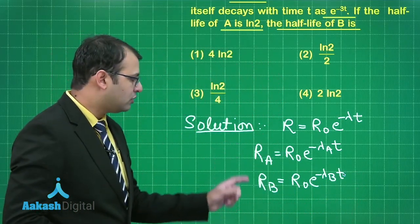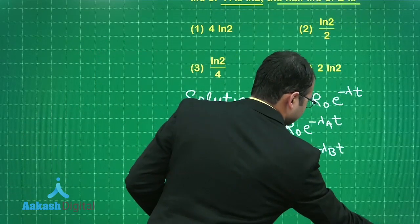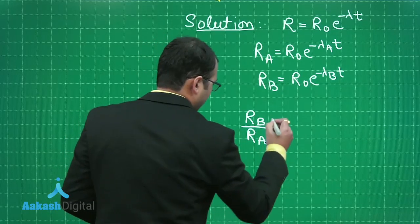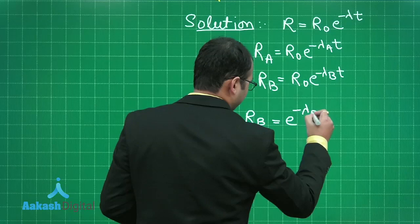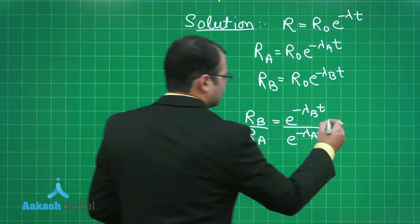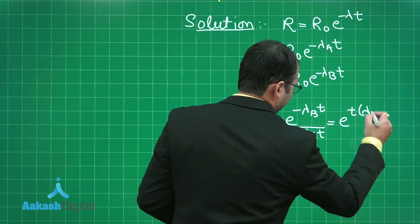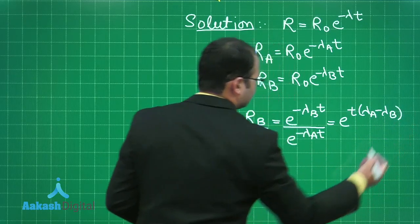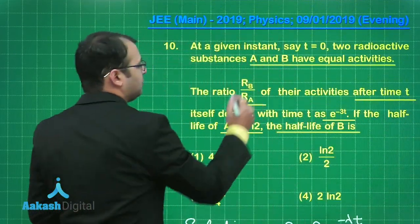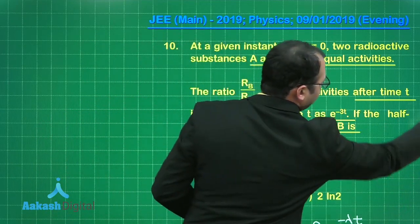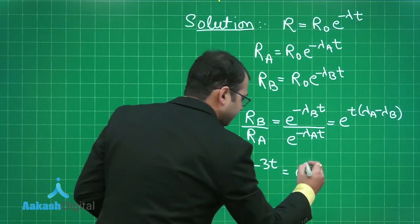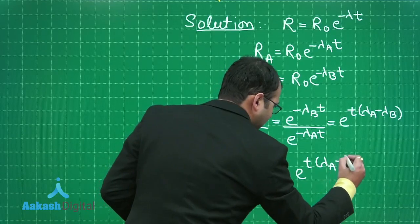Taking the ratio of these two activities, R_B by R_A equals e to the power minus lambda_B t divided by e to the power minus lambda_A t. This simplifies to e to the power t times (lambda_A minus lambda_B). As given in the question, the ratio R_B by R_A equals e to the power minus 3t. So: e to the power minus 3t equals e to the power t times (lambda_A minus lambda_B).